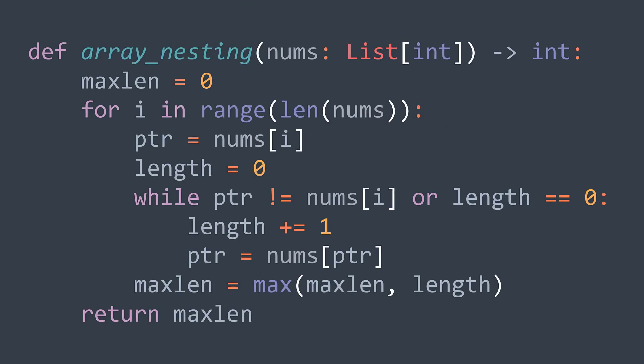In code, we create a variable maxlen initialized to zero because we don't have any sequence yet. And for each element, we put a pointer ptr to traverse the sequence. We also create a variable length to calculate the length of the actual sequence.